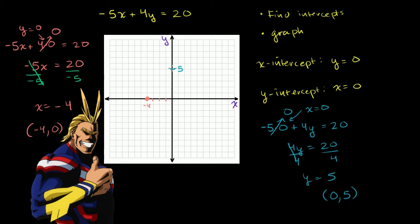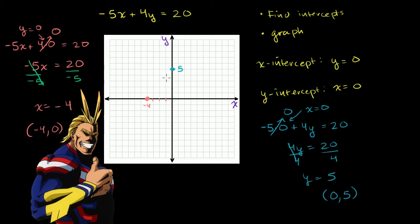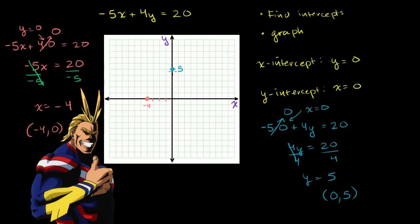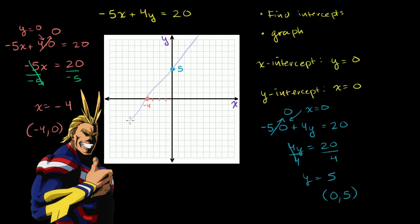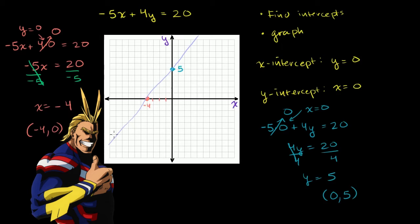And if we graph the line, all you need is two points to graph any line. So we just have to connect the dots, and that is our line. So let me connect the dots, trying my best to draw as straight of a line as I can. And that's the graph of this equation using the x-intercept and the y-intercept.